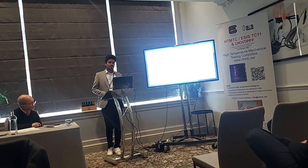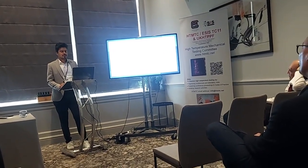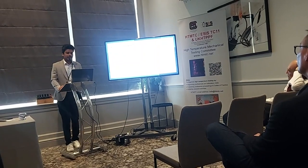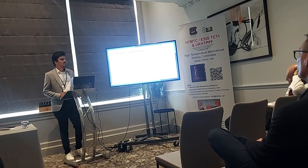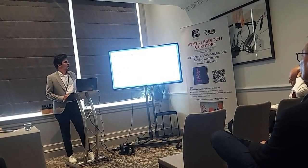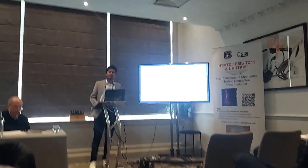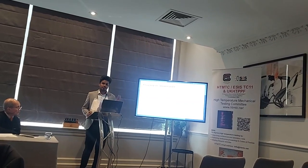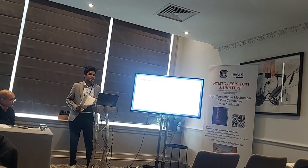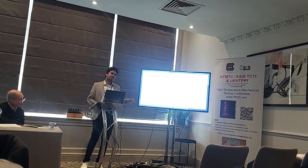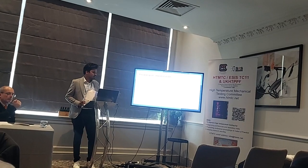Talking about the creep property estimation model: the Norton model establishes the correlation between minimum strain rate and stress, which are temperature dependent. To determine the creep constants A and N for specific materials, creep tests are performed at different stress levels and temperatures. The resulting data is used to construct a Norton plot, which is a logarithmic plot of minimum creep strain rate and stress. The slope of this line represents the creep parameter N, and the intercept gives the value of A.